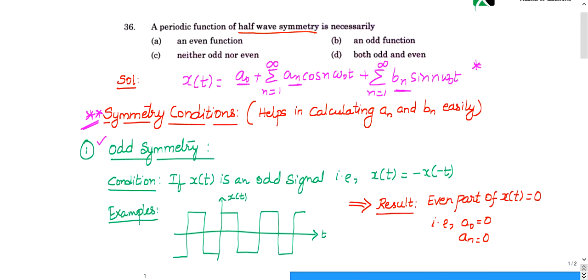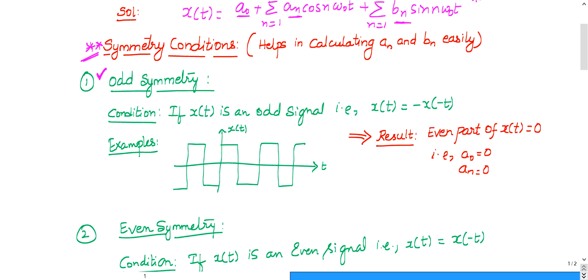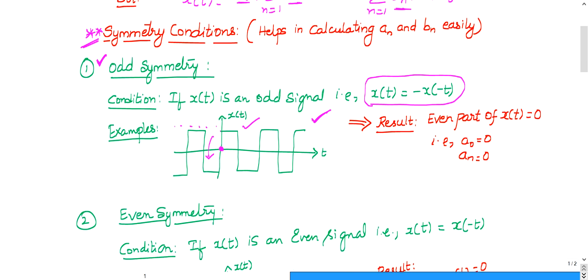The first is odd symmetry. If a given input waveform x(t) satisfies x(t) = −x(−t), you can call it an odd function. To recognize it: take the mirror image of the right half to the left half, then invert with respect to the x-axis. If the value is zero at the origin and matches, conclude it is an odd function.